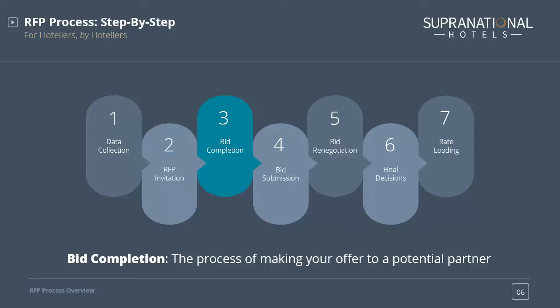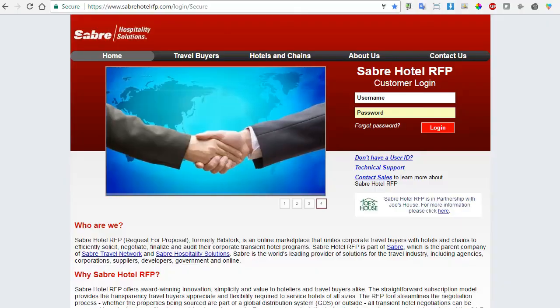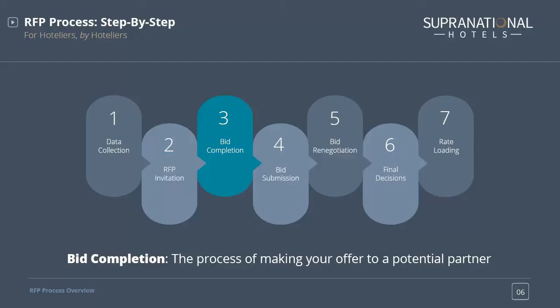Different systems have different requirements for completion but the method for doing so is broadly the same. You will be required to log into an online RFP tool such as Lanyon, Prologic, or Sabre RFP. Each system will indicate what the mandatory information to submit for any bid is, but additional information helps to sell your hotel to the corporation. They will also include a copy of the RFP's documentation so that you can review the terms, conditions and requirements of each individual RFP.